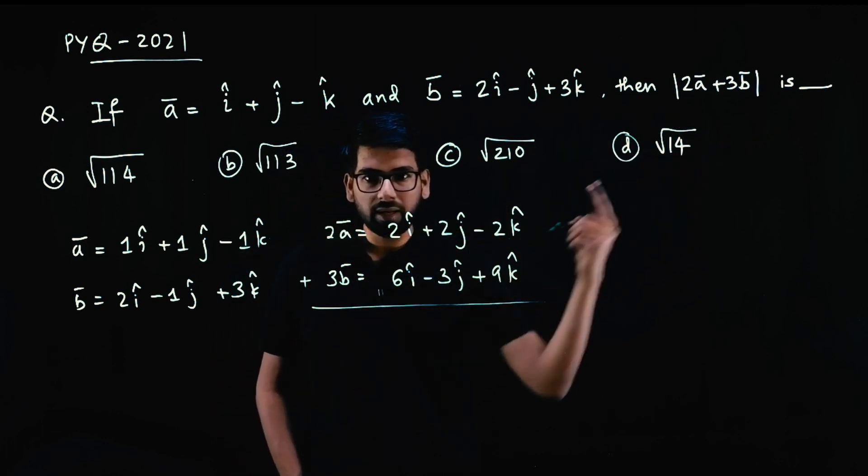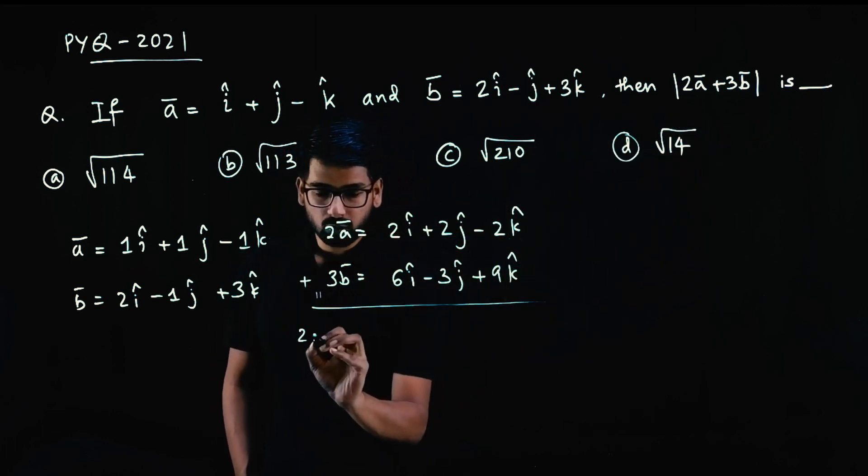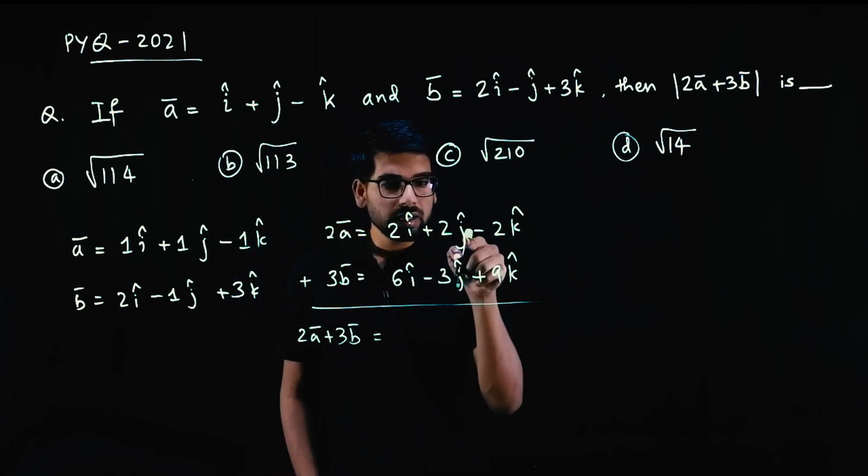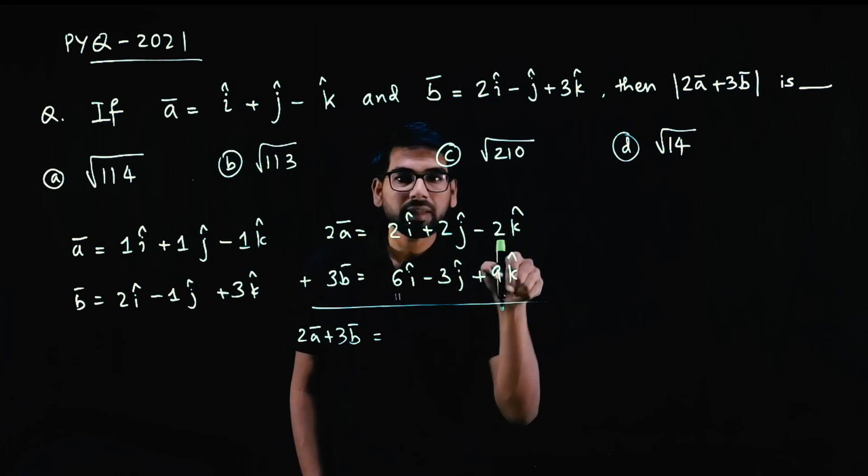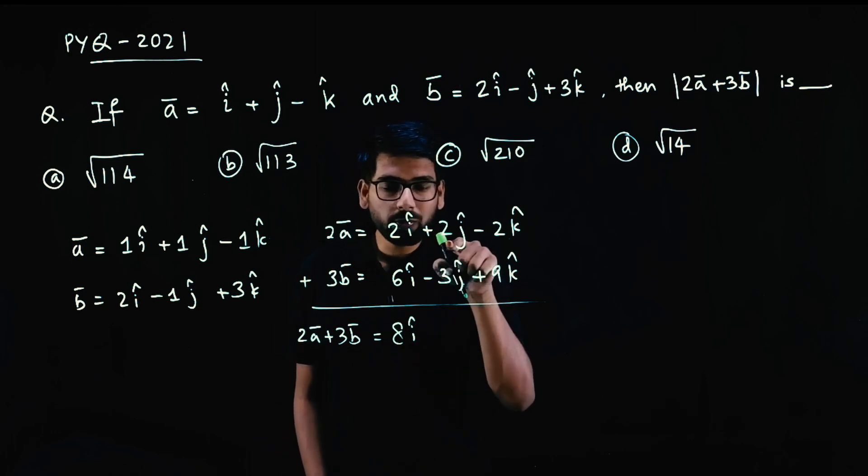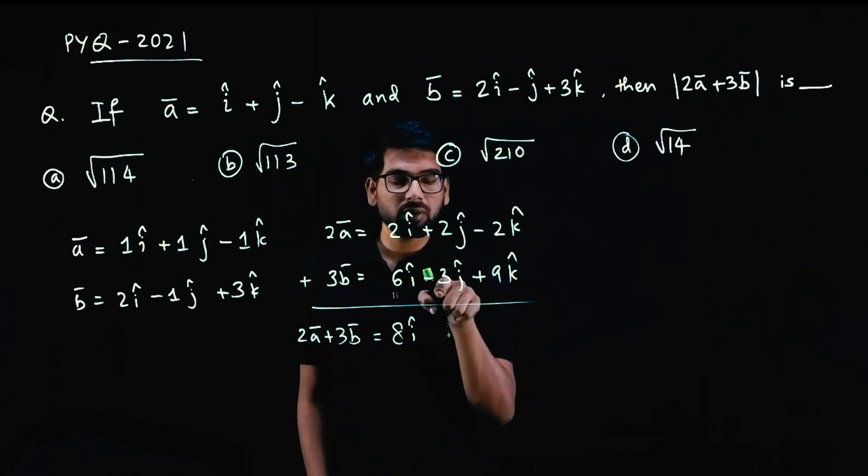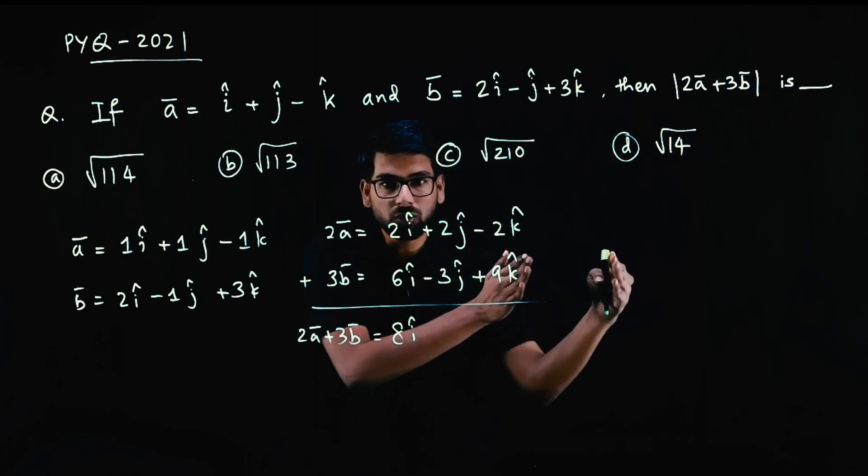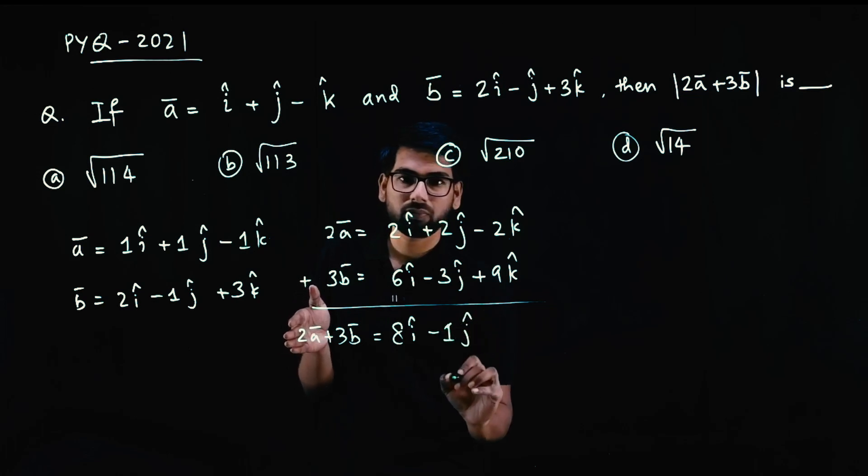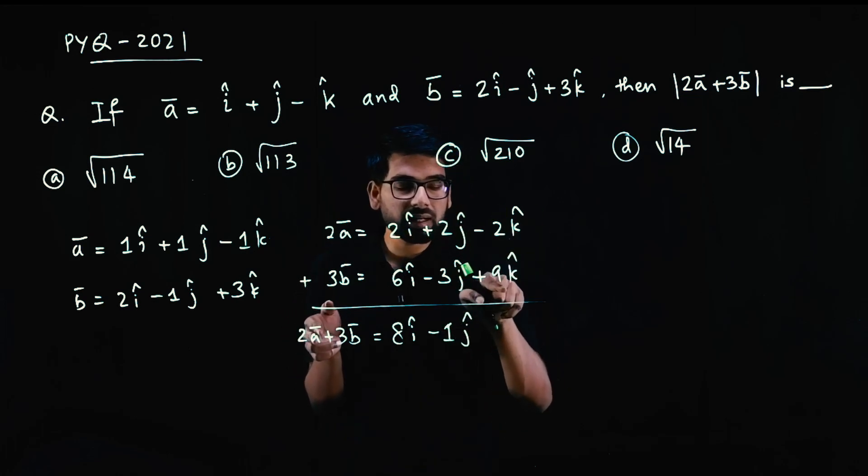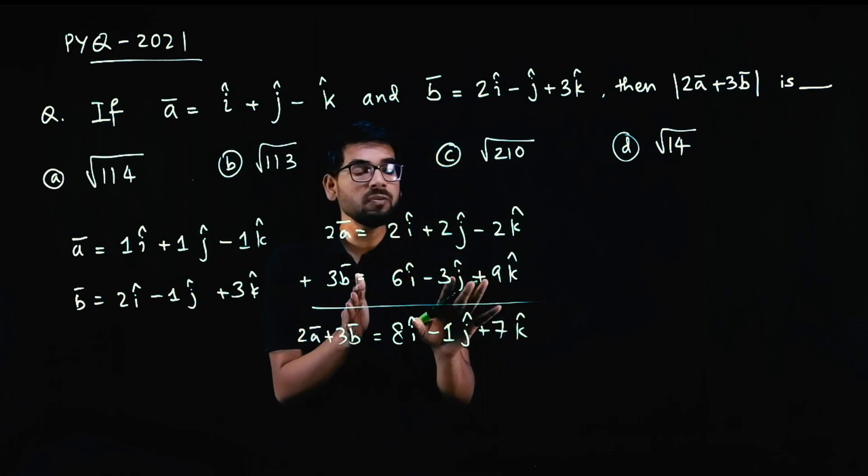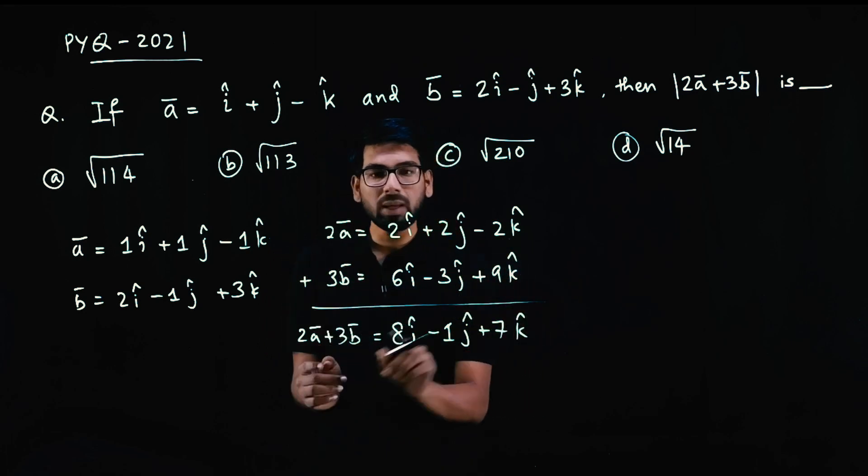So 2a plus 3b, addition will be i coefficient plus i coefficient, j plus j, k plus k. So 2 plus 6 is 8i cap. 2 plus minus 3, you have to take care of signs, so plus 2 minus 3 is minus 1j cap. Minus 2 plus 9 is plus 7k cap. Simple addition of different sign numbers. So 2a plus 3b equals 8i minus 1j plus 7k.